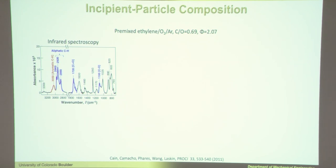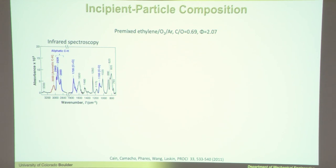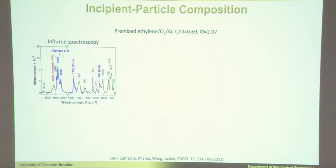Here's another experiment that was kind of a shock when it was first done by Hai Wang's group — they took soot out of a flame and did IR spectroscopy on the soot. What they saw was oxygen embedded in the particles, at least on the surface. And the left-hand peaks labeled aliphatic CH were kind of a surprise. People were like — why is there so much aliphatic? That can't be. We just didn't expect it. This was kind of a shock of an experiment.